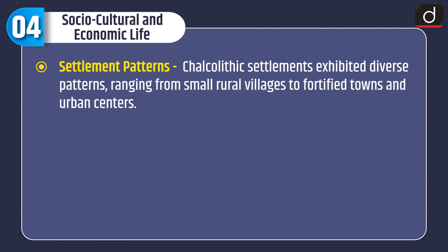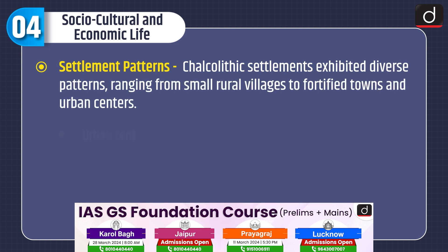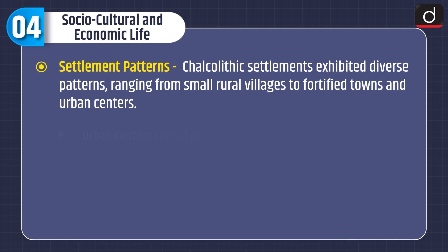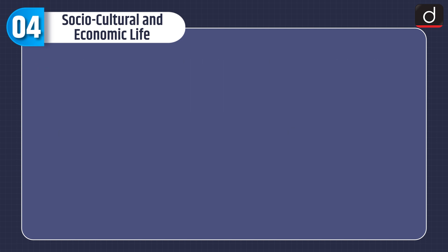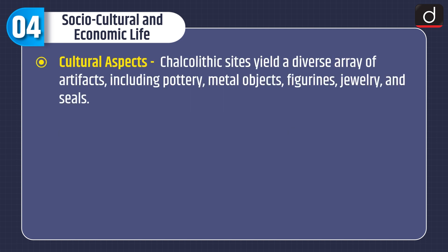Looking at socio-cultural and economic life, Chalcolithic settlements exhibited diverse patterns ranging from small rural villages to fortified towns and urban centers. Urban centers served as hubs of trade, craft production, and administrative activities, fostering social stratification and cultural exchange.